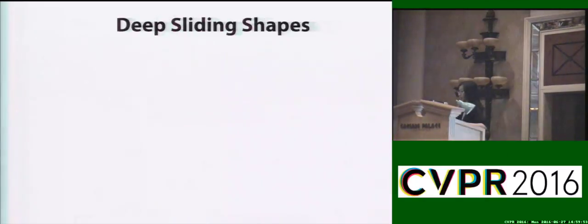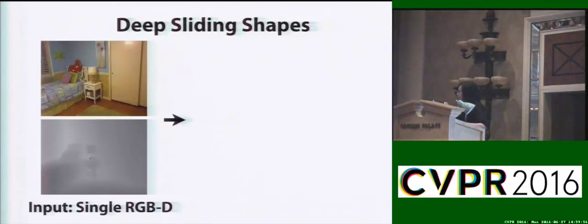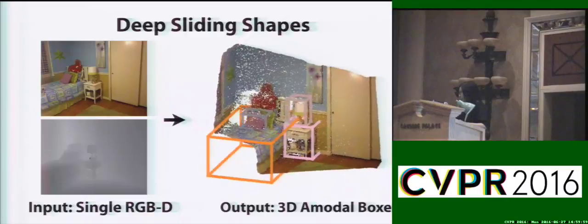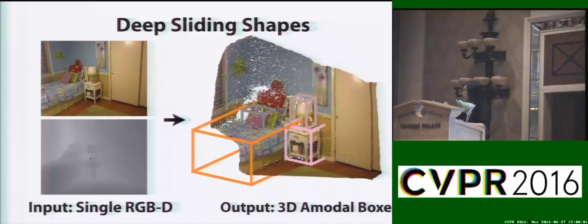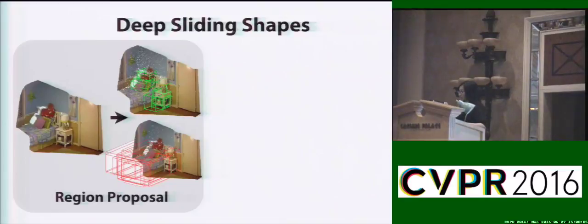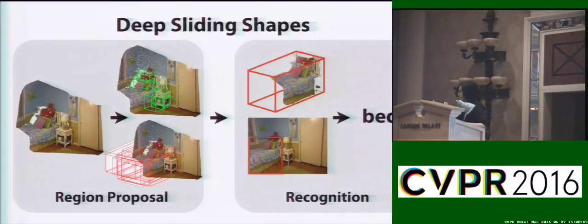To achieve this task, we introduce Deep Sliding Shapes, which takes a single RGBD image as input and outputs 3D amodal bounding boxes. Our system consists of a region-proposal network and an object recognition network.